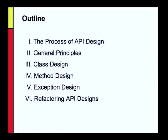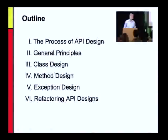Now we know the characteristics — how do we achieve them? The talk is divided into five sections: the process of API design, the general principles, those principles as they apply to classes, to methods, and to exceptions. And finally, if I have time, I'll show a couple of refactorings where we improve API designs.